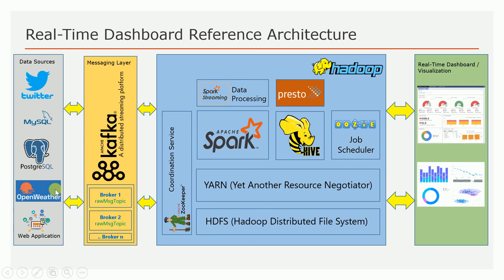The source can be any of these technologies or any of these sources. Twitter can be one source, any RDBMS can be another source, and there is an OpenWeather API which I used for this project. You can also have other sources like a web application. These sources will be pushing the data to the messaging system.